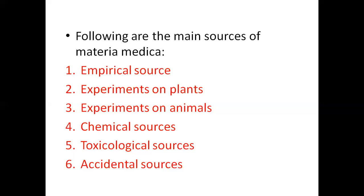Fourth is chemical sources. In this source, we find the pharmacological properties of the drug. Fifth is toxicological sources, which are found by overdoses of drugs. And sixth is accidental sources — these sources are found accidentally, like Blatta orientalis in asthma.